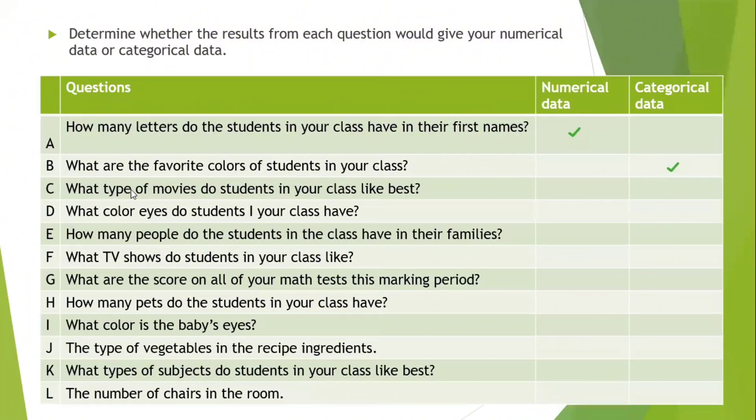C, what type of movies do students in your class like the best? Someone likes the horror film, adventure, romantic. So this is categorical. D, what color eyes do students in your class have? Someone black, someone blue, someone brown, and so on. So this is categorical. E, how many people do the students in the class have in their families? So the number of members in the family. So this is numerical data.